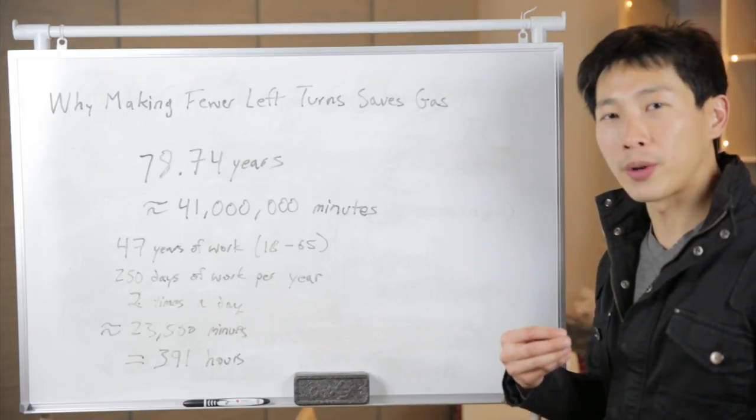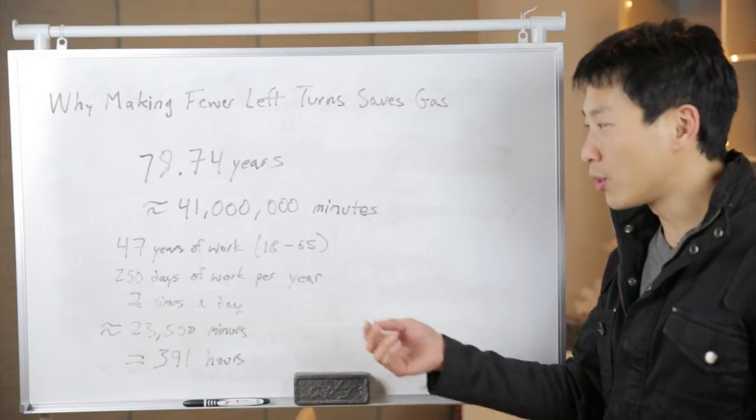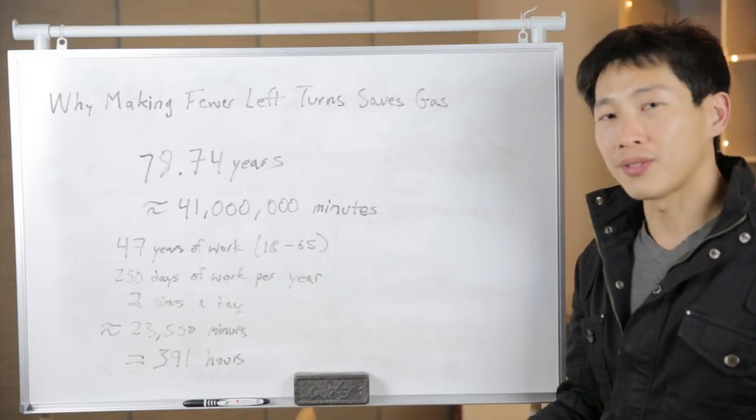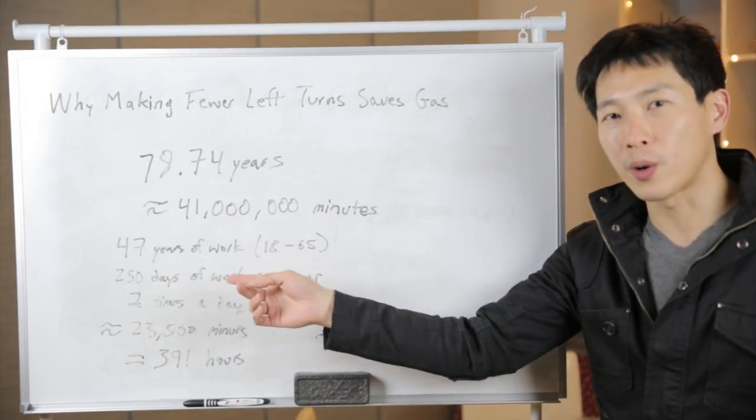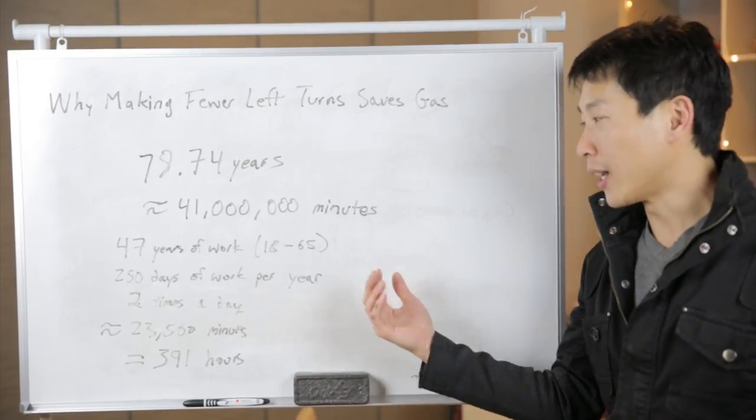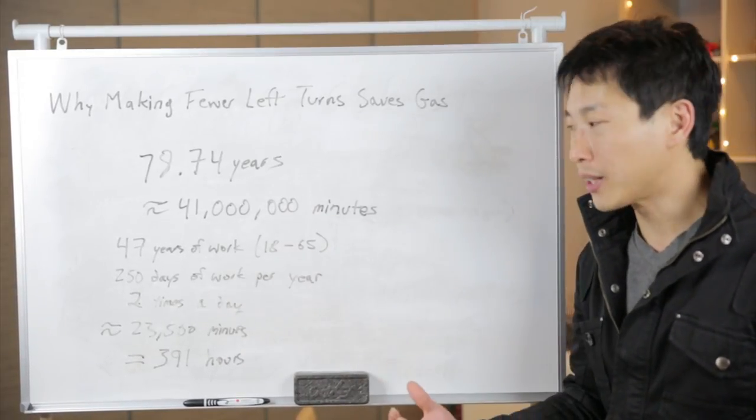Most of us are going to end up working most of our time all the way up to 65. So if you work from the age of 18 to 65, this is 47 years of work. Maybe some lucky few can retire a little bit early, 60, 55 or something like that.